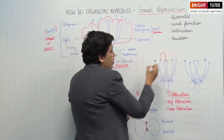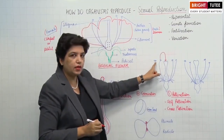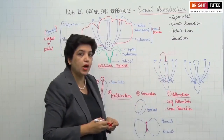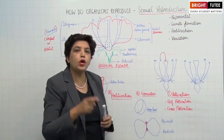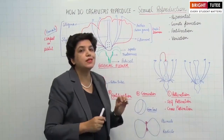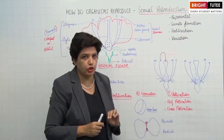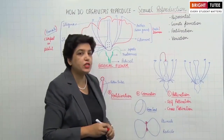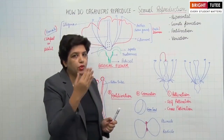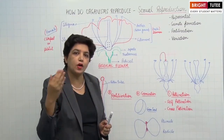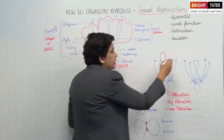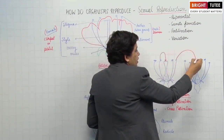If pollination occurs within the same flower — that is, pollen grains are transferred to the stigma of the same flower or a flower of a similar type on the same plant — then it is called self-pollination. But if this transfer takes place from the anther of one flower to the stigma of another flower of a similar type but on a different plant, then it is called cross-pollination.